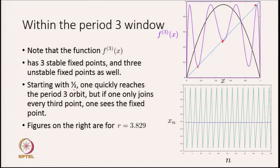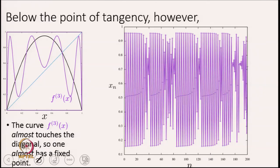If you start with the point x = 0.5 (the map maximum), one quickly reaches the period-3 orbit. If one only joins every third iterate, you can see the fixed point. The green orbit shown is the period-3 orbit cycling through first, second, and third points repeatedly. The figure on this side is for r = 3.829, which is above the bifurcation point.